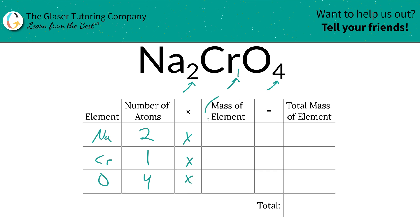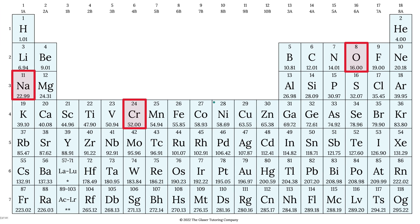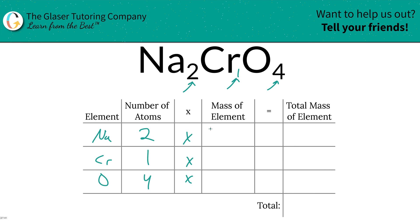Then we're going to take those number of atoms and multiply it by the mass of the elements. They are found on the periodic table. So here's the periodic table. Sodium is 22.99, chromium is 52, oxygen is 16. So this is 22.99 for sodium, chromium was 52, and oxygen was going to be 16.